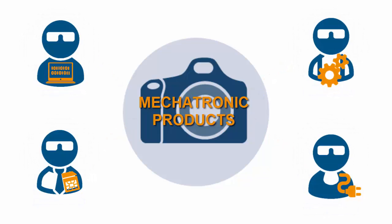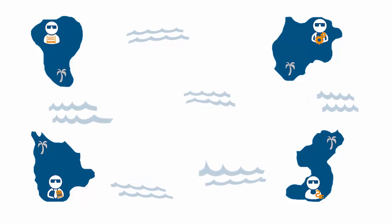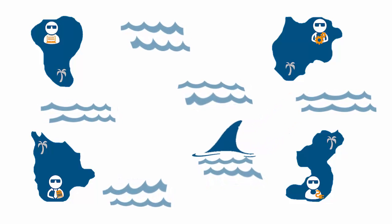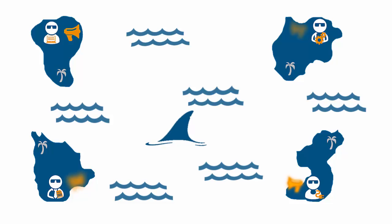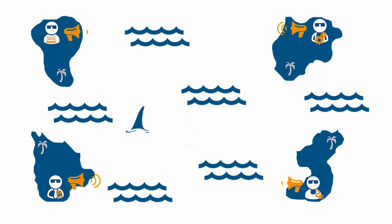The growing product complexity we are facing today is mainly caused by the strong dependencies between these four domains. Since there are many different engineers from various disciplines involved in the development of mechatronic products, not only the products but also the development processes are becoming more and more complex. All engineers use their specific tools to design and define the product, but those tools are only isolated IT solutions. Metaphorically speaking, it is as though your engineers live on different islands and have difficulties communicating with one another.